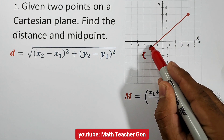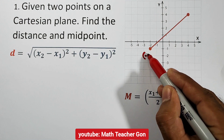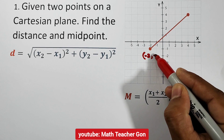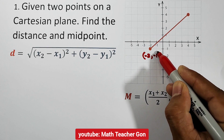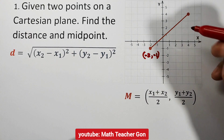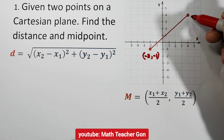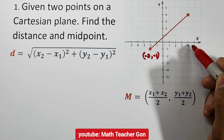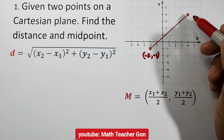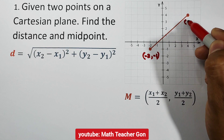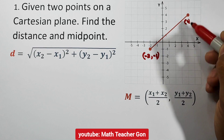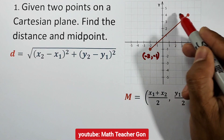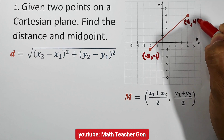The first point has x coordinate negative 2 and y coordinate negative 1. For the second point p_sub2, we have positive 4 for the x coordinate and 4 for the y coordinate.